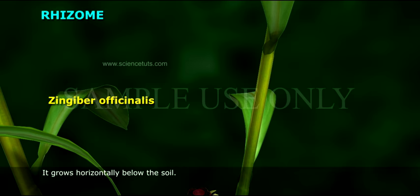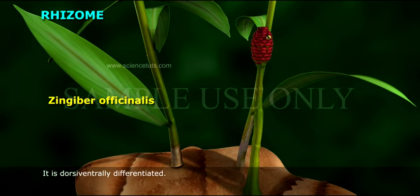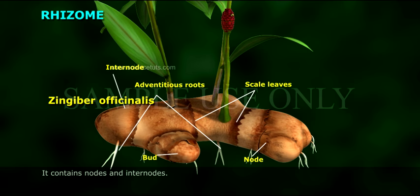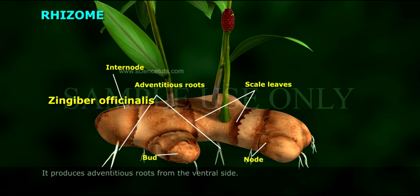Rhizome: It grows horizontally below the soil. It is dorsi-ventrally differentiated. It contains nodes and inter-nodes. At the nodes, scale leaves are present. It produces adventitious roots from the ventral side.